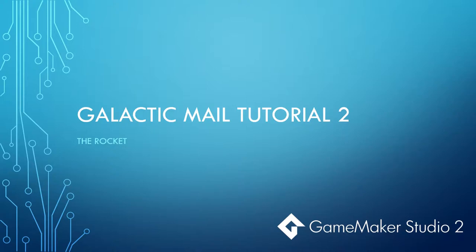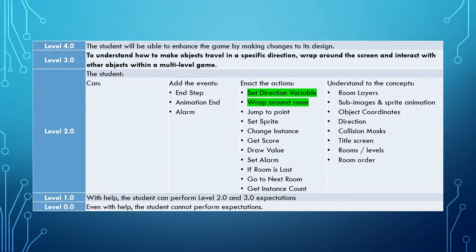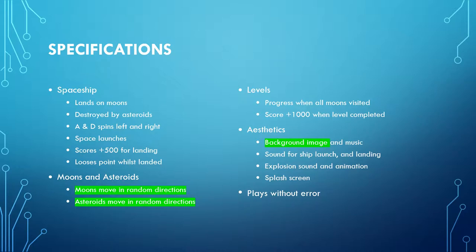Here we are with our second video in the Galactic Mail tutorials. This one we're going to be focusing on the rocket. So far in our learning objectives we've learned about the actions of set direction variables and wrap around the room. In our previous tutorial we ticked off creating both moons and asteroids that move in random directions upon creation, and made a background image. In this tutorial we're going to create the spaceship object and make it so pressing the A and D keys will make it spin left and right.